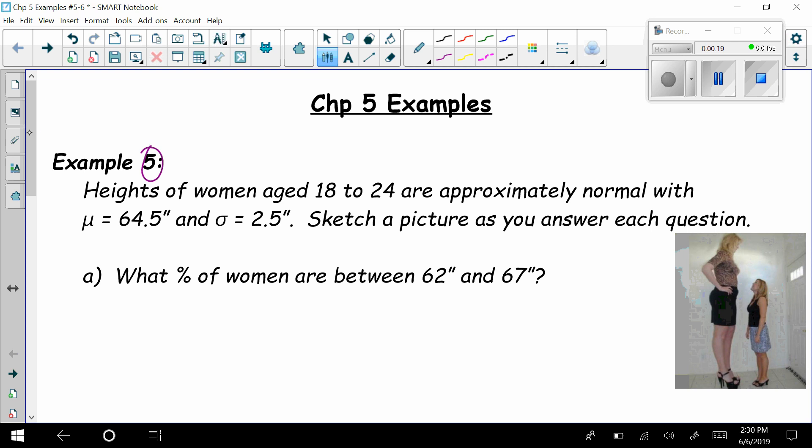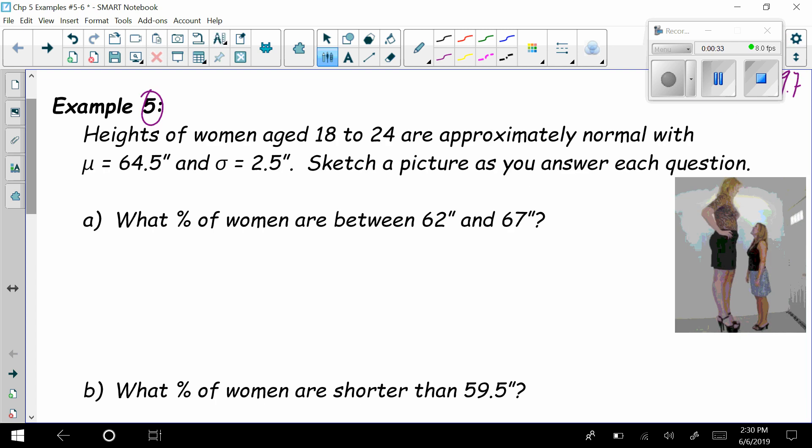It's helpful to remember the empirical rule, also known as the 68, 95, 99.7 rule. So here we have some general things. We have a mean. We have women, heights of women between 18 to 24 are approximately normal. This is big, with a mean of 64.5 and a standard deviation of 2.5. Sketch a picture as you answer each question. So you have to do it for each question. You have to sketch a picture.